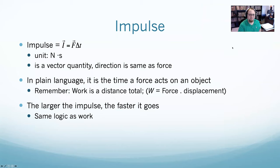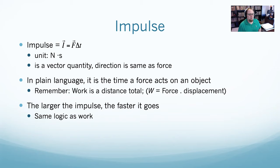What I want to start with is something called impulse. Anytime a force is acted on an object, impulse is the force applied times the time that force is applied. Of note, that makes its units Newton-seconds, and it is also a vector quantity where the direction of impulse is the same as the direction of the force. How hard of a force did you apply, and how long did you apply that force? Keep in mind: work is force times distance; impulse is force times time. If you push to the left, impulse is to the left.